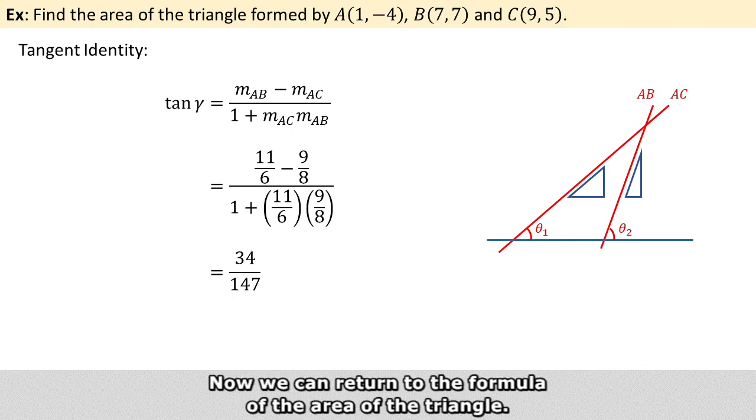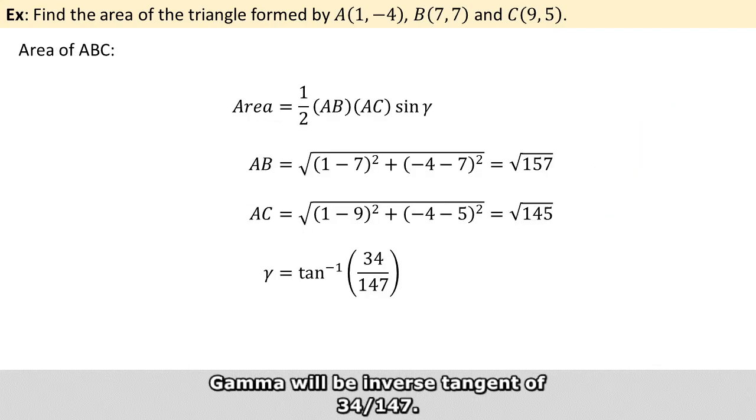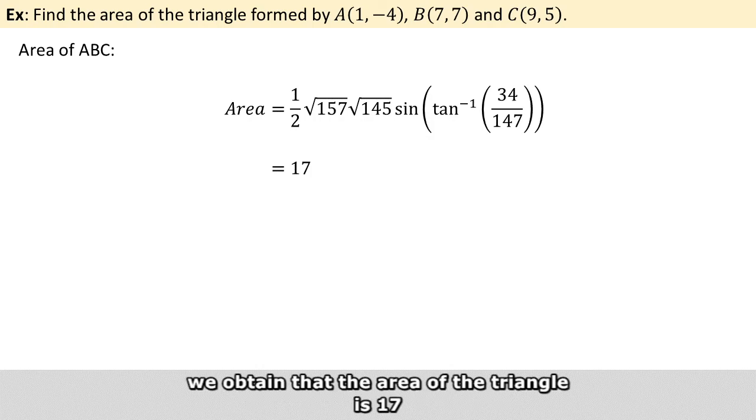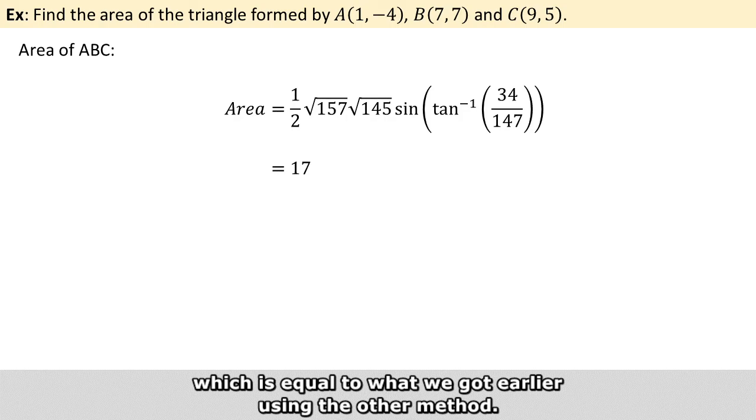So now we can return to the formula of the area of the triangle. Gamma will be inverse tangent of 34 over 147. And putting all the numbers in, we obtain that the area of the triangle is exactly 17, which is equal to what we got earlier using that other method.